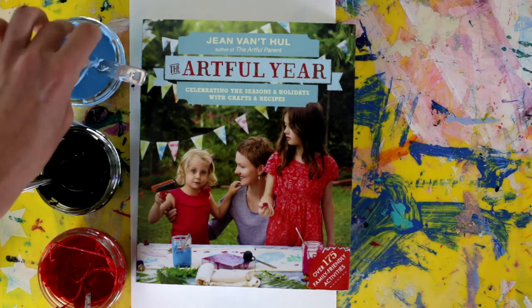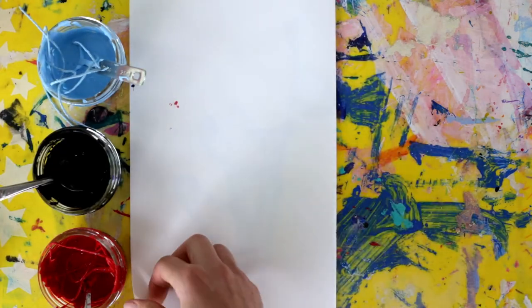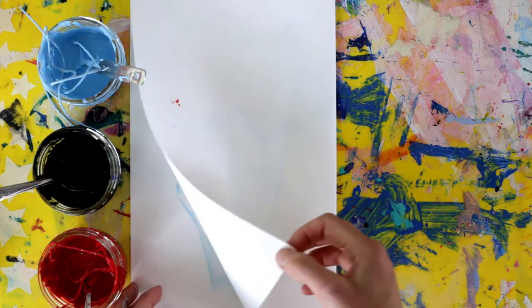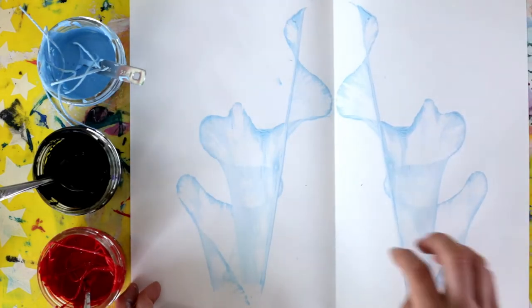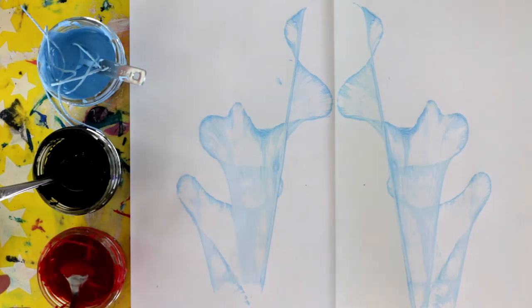Put it back in the paint. And then open up to reveal your pulled string print or pulled string artwork. You can be done right there, or you can go ahead and add another color or two.